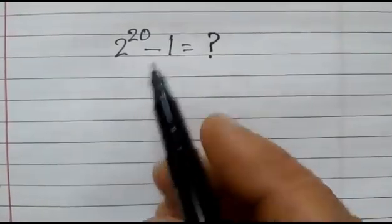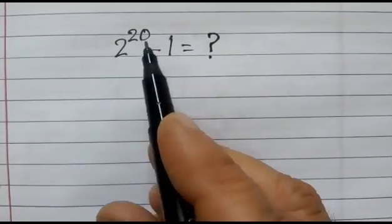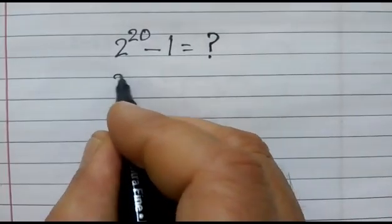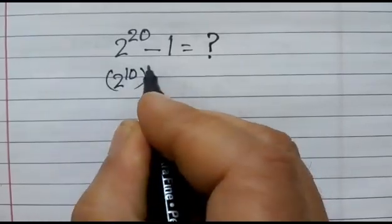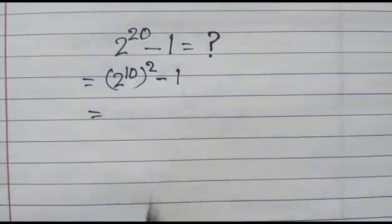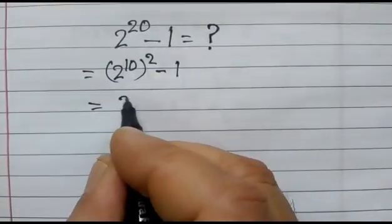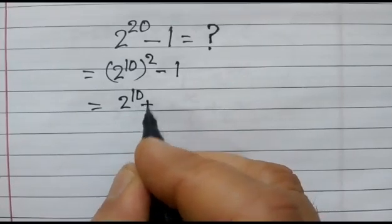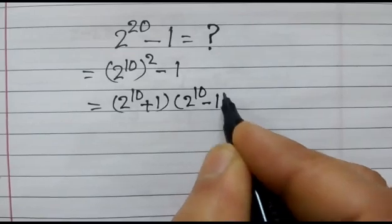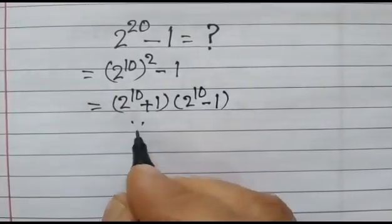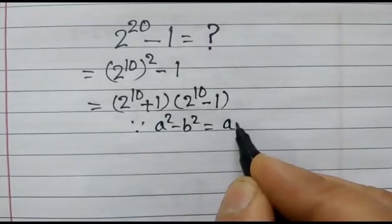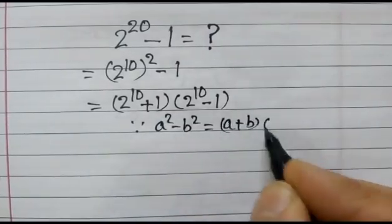We have to find the value of 2 to the power 20 minus 1. We can write this as (2 to the power 10) squared minus 1, and then apply the identity a squared minus b squared equals a plus b times a minus b, giving us (2 to the power 10 plus 1)(2 to the power 10 minus 1).